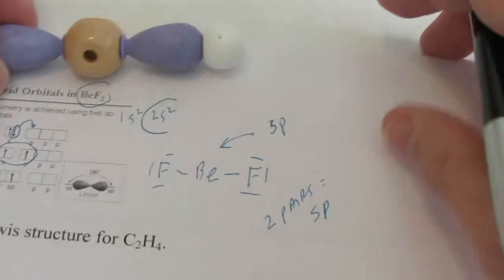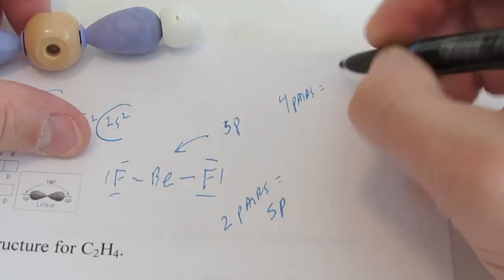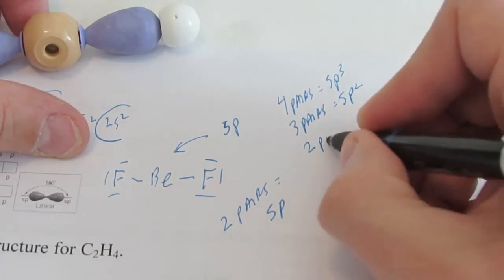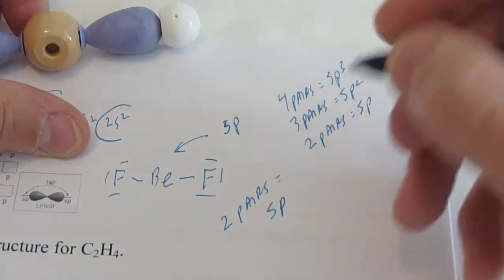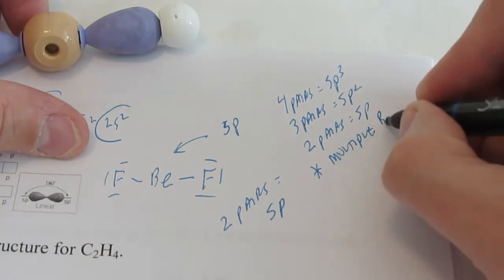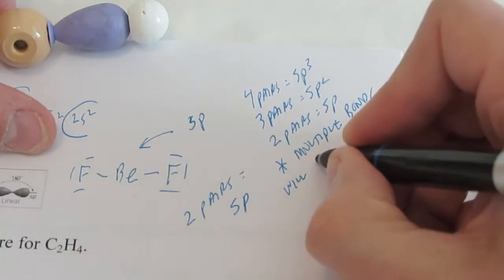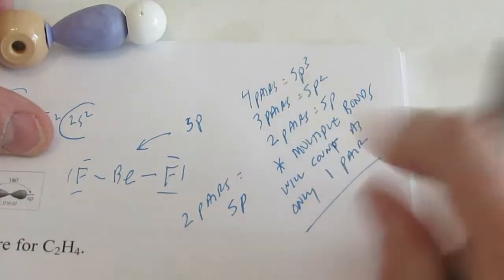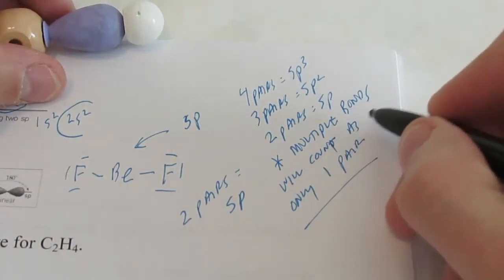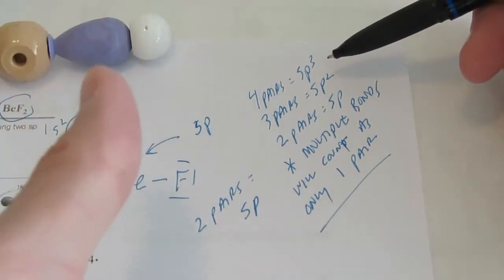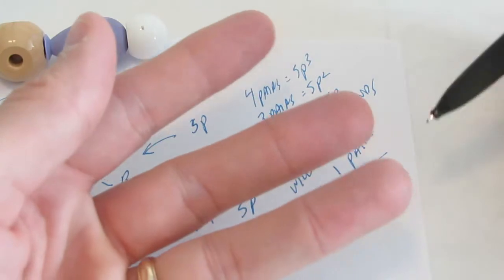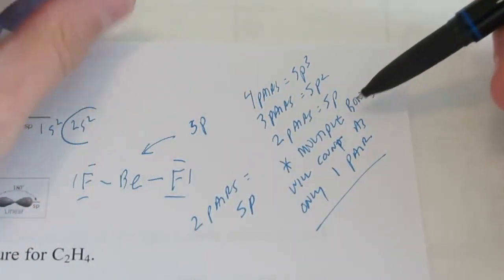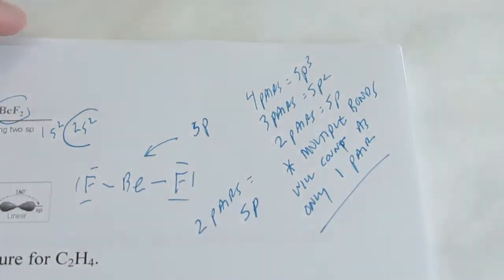So let's just recap quickly. If I have four pairs around an atom, we call that SP3 hybridization. If there are three pairs, we call that SP2. Two pairs is SP. Now I'm going to add a note here: multiple bonds, to determine hybridization, we'll count as only one pair. So if we have multiple bonds, we're going to count that as one pair — we're going to show you why here in just a second. So four pairs would be one S with three Ps for a total of four hybrids. Three pairs would be an S with two Ps — three hybrid orbitals. And once again, multiple bonds will count as only one pair.